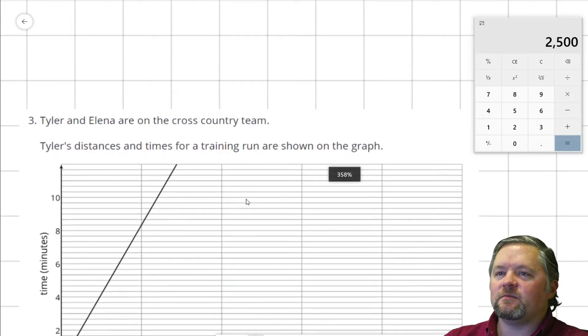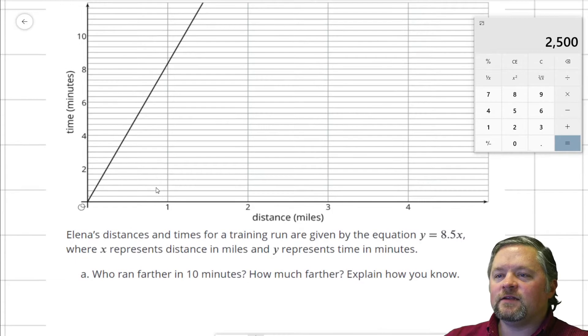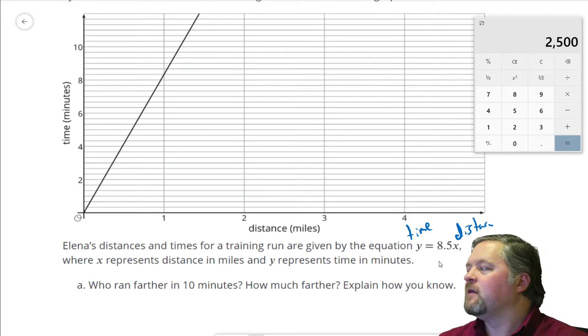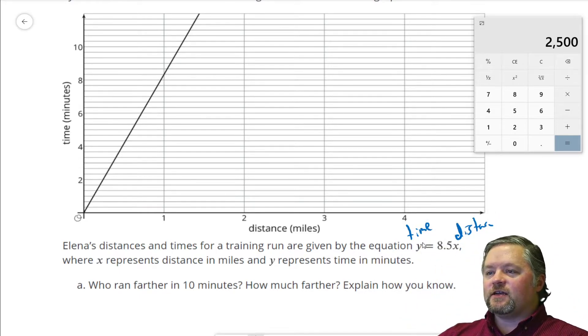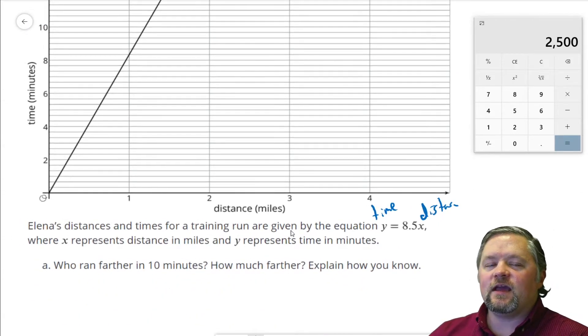Okay, next problem. What's coming up next? Tyler and Elena are on the cross-country team. Tyler's distance and times for training are shown on the graph. Elena's distance and times for training are given by the equation y equals 8.5x, where x is distance, and y is time. So, first thing I'd like to check here is y time, x distance, does that match our graph? Yes, x is distance, y is time. Those match. So, we can compare them.